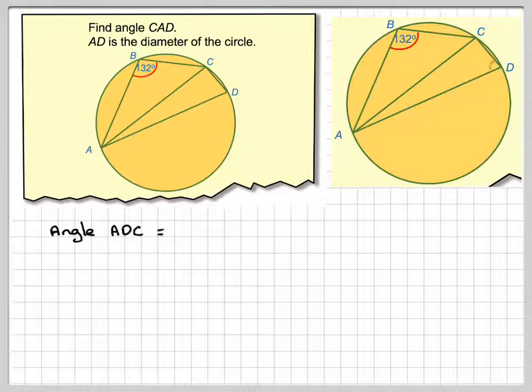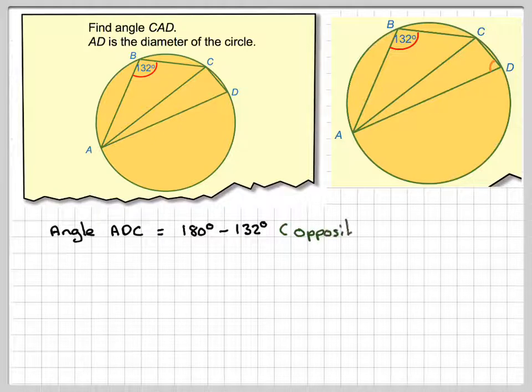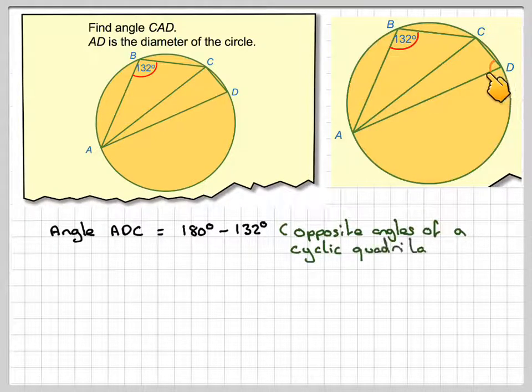Angle ADC, which is this one here, is actually opposite this angle here. The sum of two opposite angles in a cyclic quadrilateral is 180 degrees. So we can find this one by doing 180 minus 132, opposite angles of a cyclic quadrilateral, which equals 48 degrees.